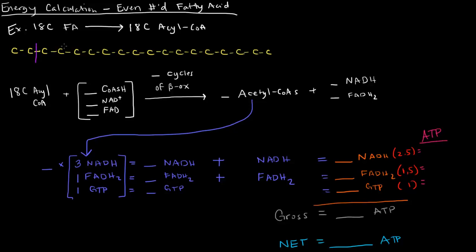This would be 1, 2, 3, 4, 5, 6, 7, 8 rounds of beta-oxidation.